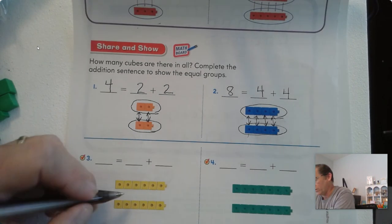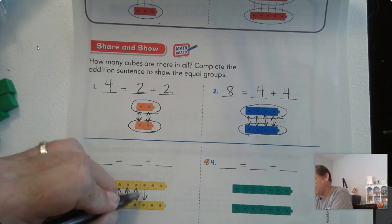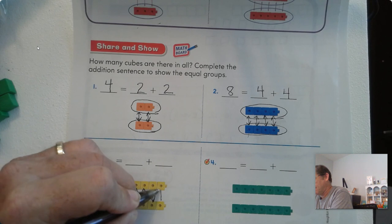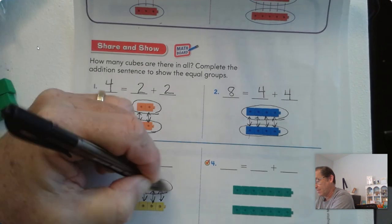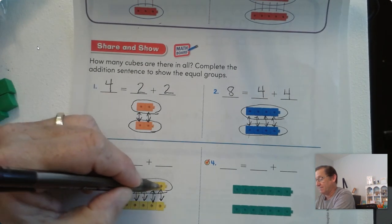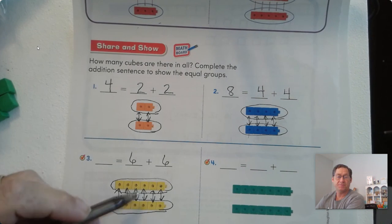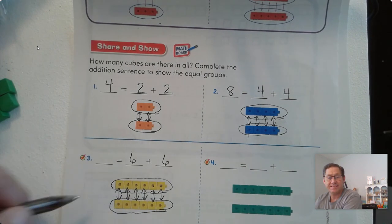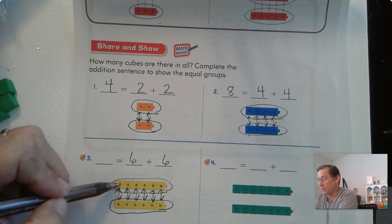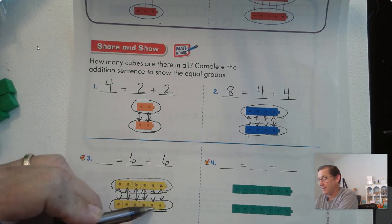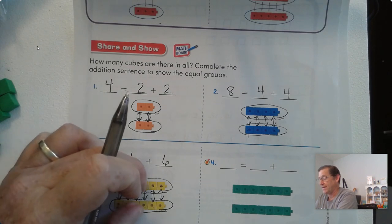Number 3 — there's more here. How many do we have in our first group? We have 1, 2, 3, 4, 5, 6. We know the bottom is the same because there are matches for all of them. So we have 2 groups of 6, and 6 plus 6 is 12. We can confirm by counting by 1s to 12, or by 2s: 2, 4, 6, 8, 10, 12.